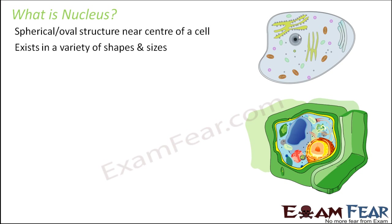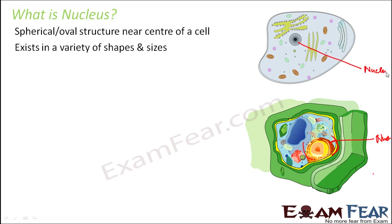As far as the location is concerned, sometimes in some plant cells, due to the presence of a large vacuole, the nucleus gets pushed towards the periphery. So this is a plant cell, and here you can see this big blue colored structure which is nothing but a vacuole occupying almost more than 50% of the space. This orange structure is the nucleus, located at the periphery due to the presence of the vacuole, but otherwise it is mostly located at the center.